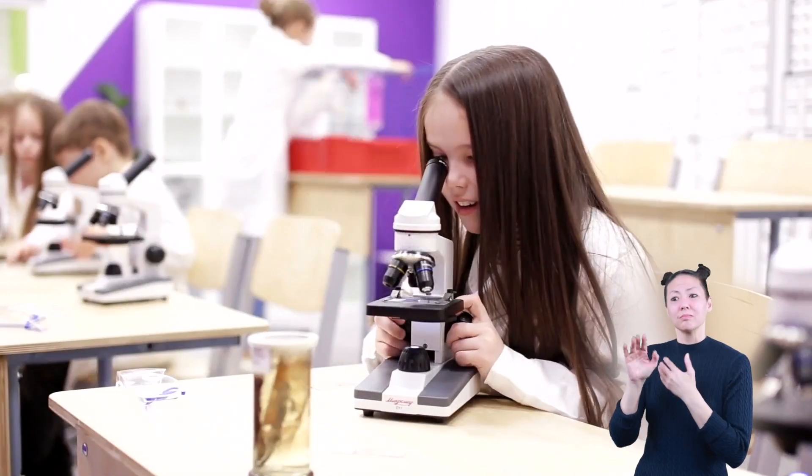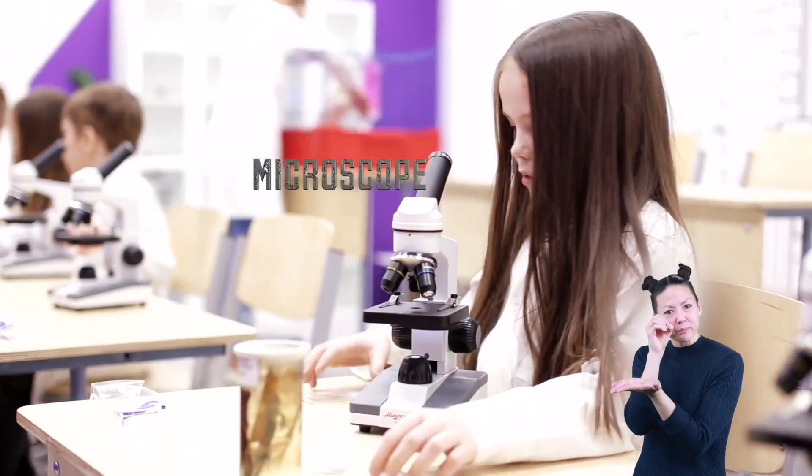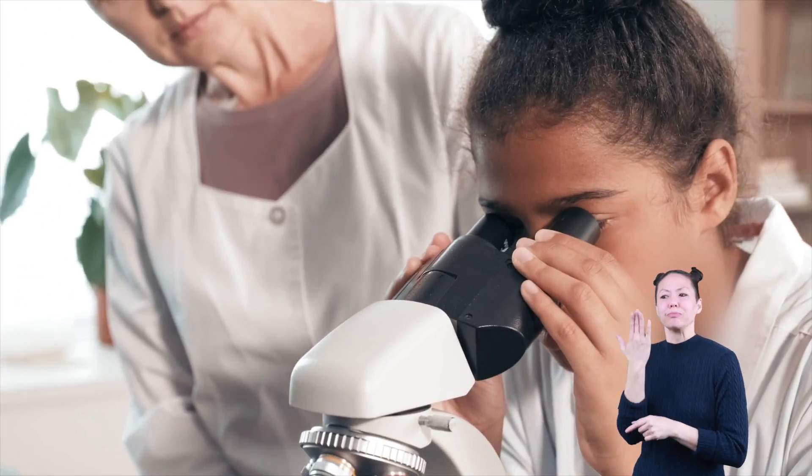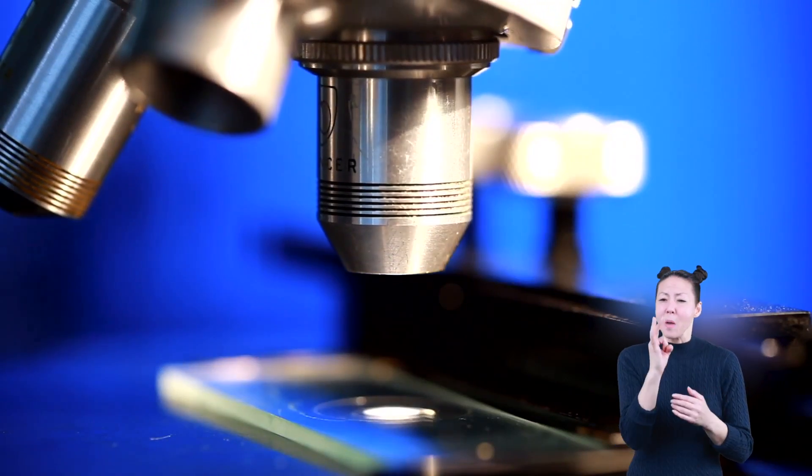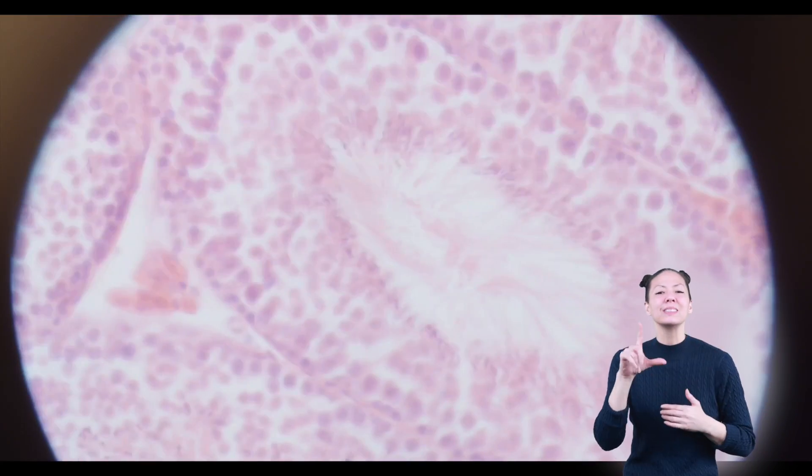Nearly all cells are very tiny and can't be seen without a special tool called a microscope. You have probably seen a microscope and maybe even used one before. They make small things look bigger. Under a microscope, you can see the different parts of a cell.